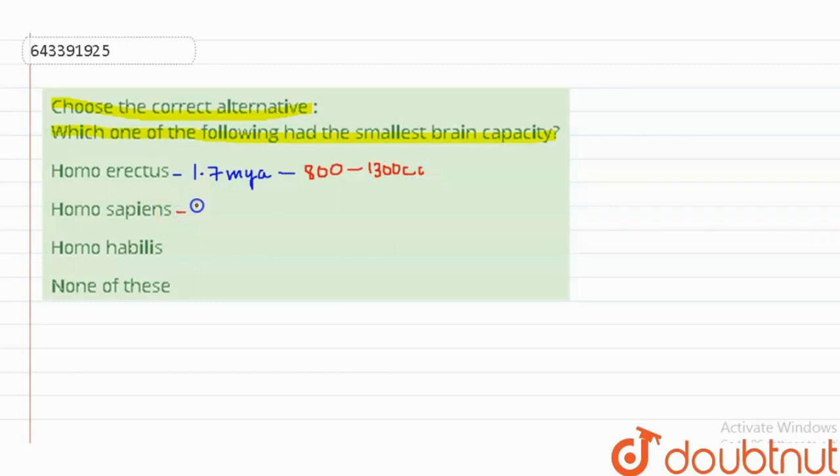sapiens. Homo sapiens arose around 25,000 years ago and they had the brain capacity of 1300 to 1600 cc.